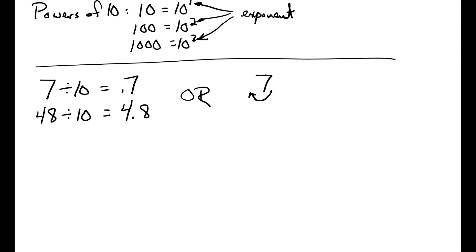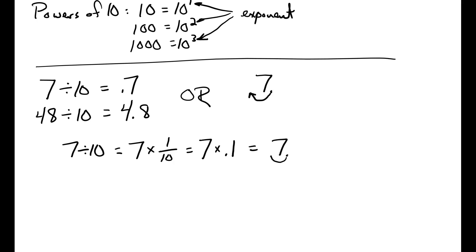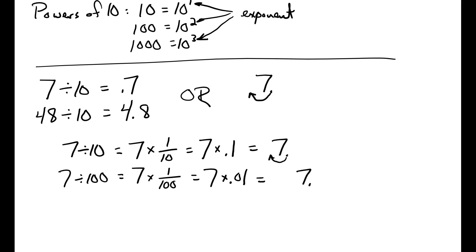Another way to think about dividing by 10 is as multiplying by one-tenth, and dividing by 100 is the same as multiplying by one-hundredth, and so on. For example, I could write 7 divided by 10 as 7 times one-tenth, or 7 times 0.1 in decimal form — it's just moving the decimal point one place to the left. And 7 divided by 100 is 7 times one-hundredth, which is 7 times 0.01 — moving the decimal point two places to the left.